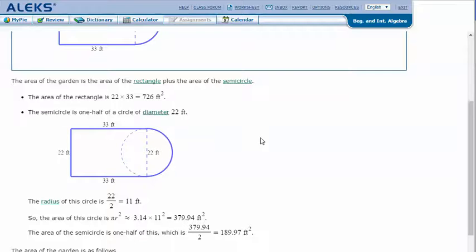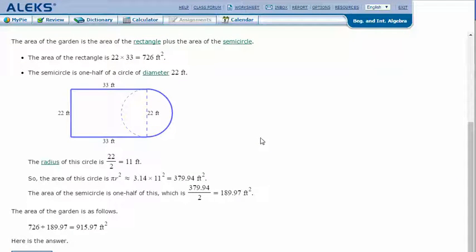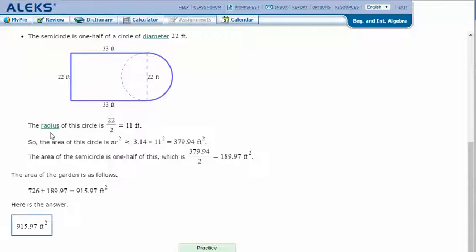The area of the garden is the area of the rectangle plus the area of the semicircle. The area of the rectangle is 22 times 33, which is 726 feet squared. The semicircle is one-half of a circle with diameter of 22 feet.